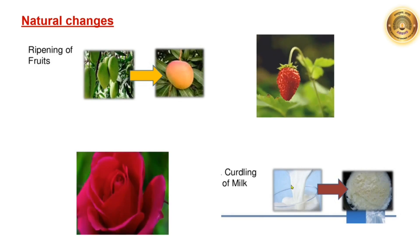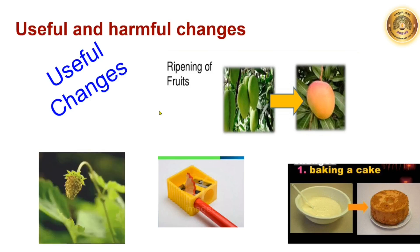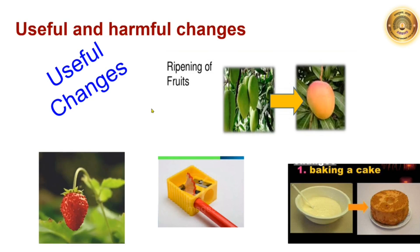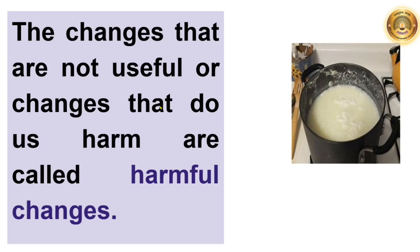Whereas some changes are man-made. Many changes such as sharpening a pencil, baking a bread, cooking food, are useful to us. Therefore, these are called useful changes. The changes that are not useful or changes that do us harm are called harmful changes. For example, the curdling of milk is a harmful change. Now, can you classify the natural and man-made changes as useful and harmful changes?